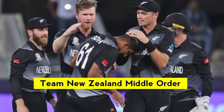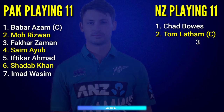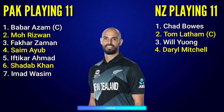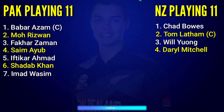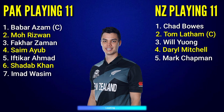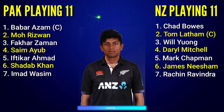Team New Zealand middle order: No. 3 batter Will Young, No. 4 all-rounder Daryl Mitchell, No. 5 batter Mark Chapman, No. 6 all-rounder Jimmy Neesham, No. 7 all-rounder Rachin Ravindra.